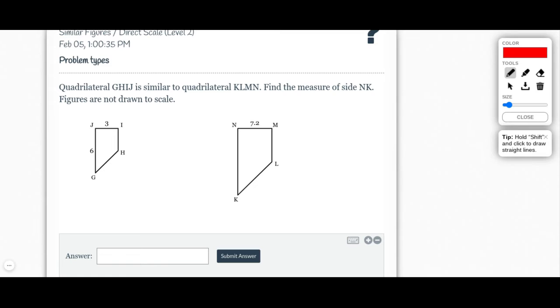So again, I'm going to start by identifying the side that I need. I need NK. NK is right here. The one on the left is smaller. The one on the right is larger. So I know I'm going from here to here and I'm multiplying by some number. The number has to be larger than 1 because the numbers are increasing. So I see over here JI was 3 and NM was 7.2.